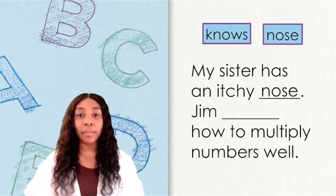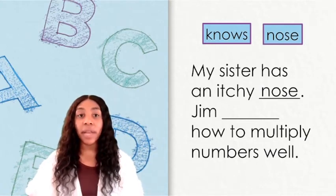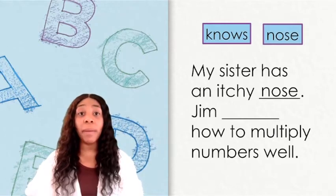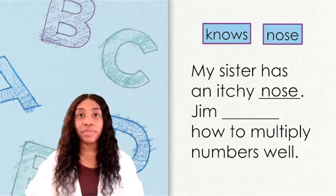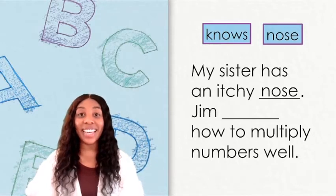Let's take a look at the second blank. This next blank talks about the fact that Jim understands or can multiply. Which nose fits best in the second blank? If you said K-N-O-W-S, you were correct.